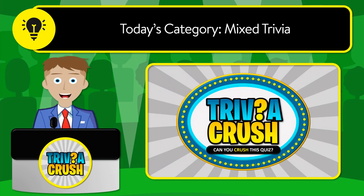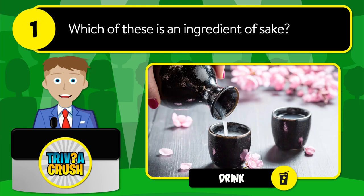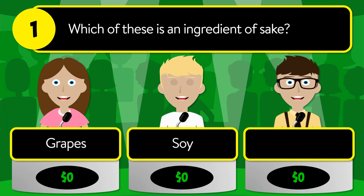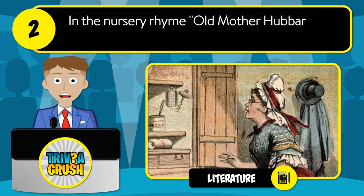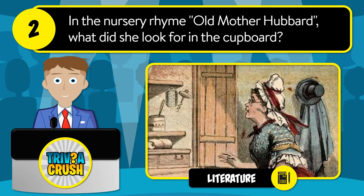Welcome to Trivia Crush! Today's category is mixed trivia. Let's get started. Question number one: which of these is an ingredient of sake? Is it grapes, soy, or rice? The correct answer is rice.